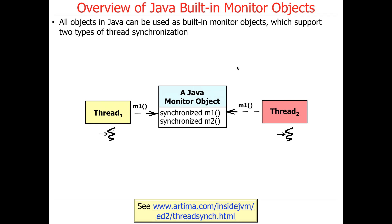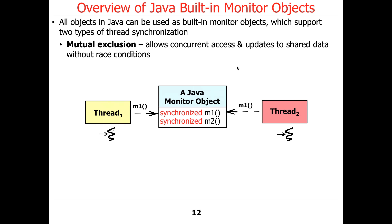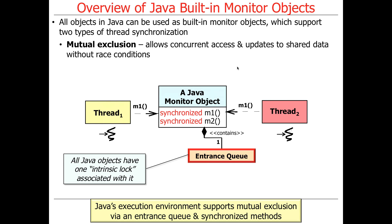This is because the Object class defines the methods wait, notify, and notifyAll, so everything implicitly inherits from Object unless it's a built-in. There are two types of thread synchronization supported by Java monitor objects. The first is mutual exclusion, done through synchronized methods or blocks, which allows you to mediate concurrent access and updates to shared data structures without race conditions. This works through the concept of an entrance queue. All Java objects, which are monitor objects, have one and only one intrinsic lock — that's what you use when you say 'synchronized(this)'.